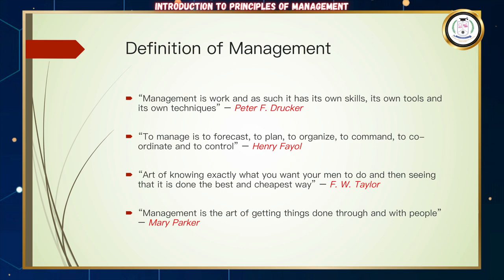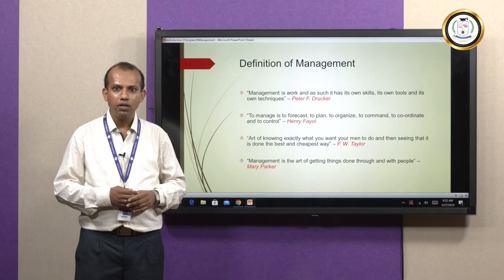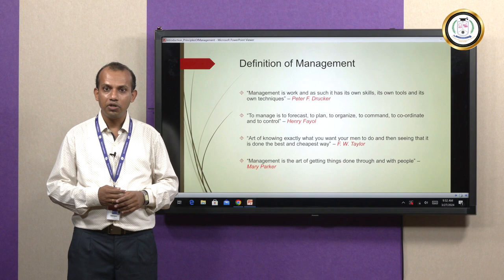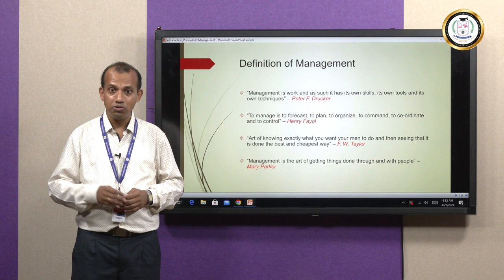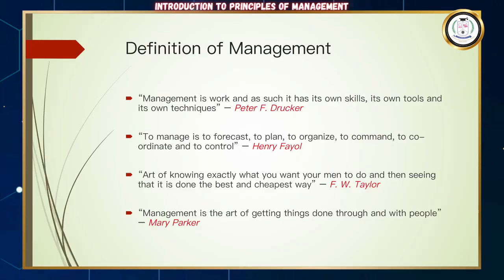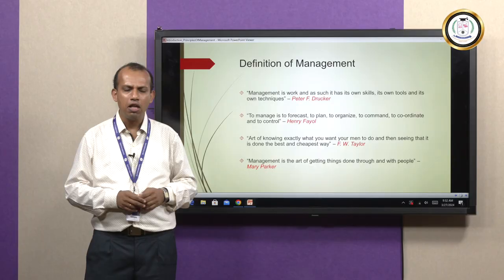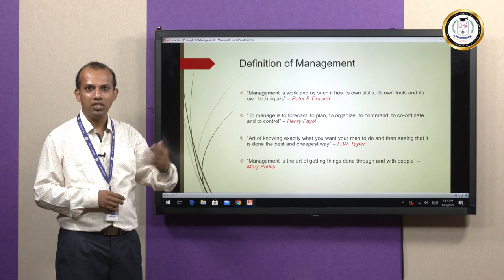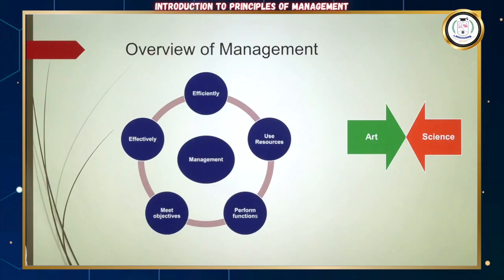Next is Henry Fayol. He is called the father of management theory and introduced the 14 principles of management. He held various roles during the French Revolution up to the managerial level. Next is Frederick Winslow Taylor, called the father of scientific management. Looking at all these keywords, what can we deduce about our understanding of management?